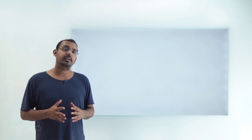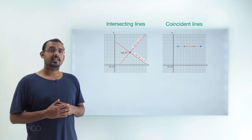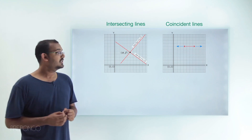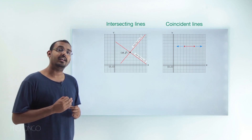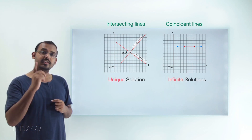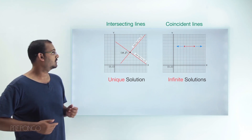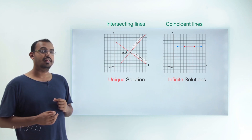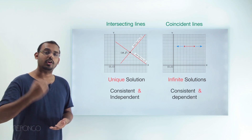Now let's move on and study what different methods exist for solving a pair of linear equations in two variables. Before doing that, there is one particular thing we should be aware of. For the three different cases, where a pair of lines intersects at only one point and where a pair of lines is coincident, these are the two cases where we can find a solution. In the first case we find a unique solution, and in the second case we can find infinitely many solutions because there are multiple points lying on both coincident lines.